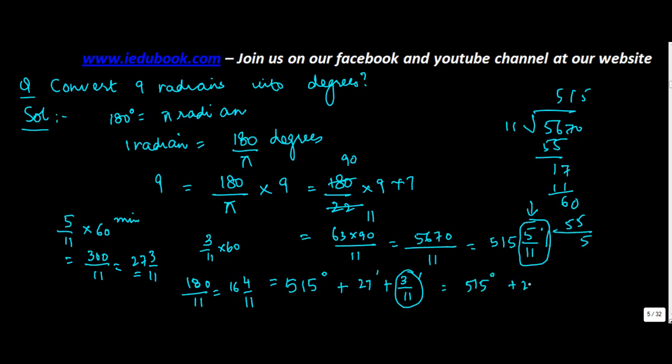So you can write this as 515 degrees plus 27 minutes plus 16 and 4 by 11 seconds.